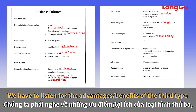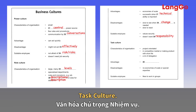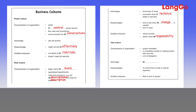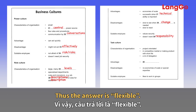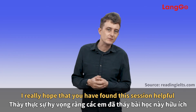Question 40 — we need to listen for the advantages or benefits of the third type, task culture. The speaker says: one of the major benefits of this culture is that it's flexible. It's indicated in the recording that one of the major benefits of task culture is flexibility, so the answer is 'flexible'.